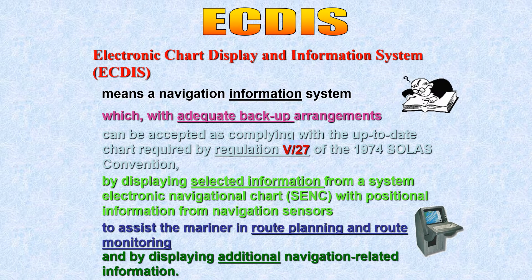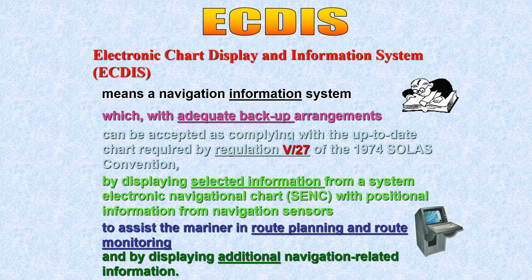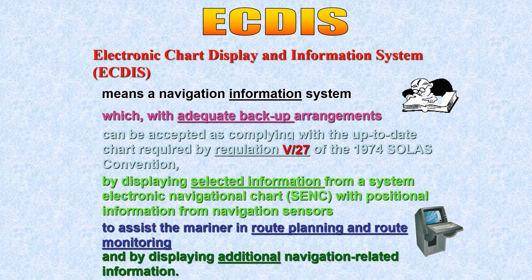ECDIS will assist the mariner in route planning and route monitoring — it does NOT say it will assist in collision avoidance. Remember that. It also displays additional navigation-related information, which could be what you select as the user or what you integrate with the equipment — radar overlay, AIS, GPS. The word 'additional' is not specifically defined; it covers whatever equipment you integrate.